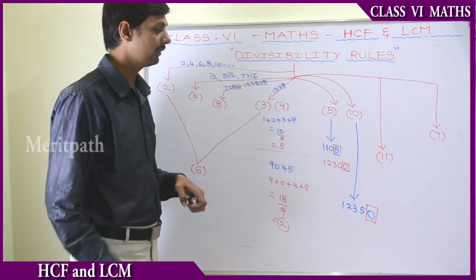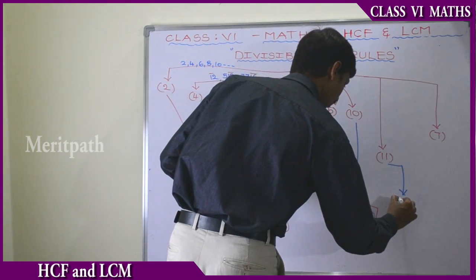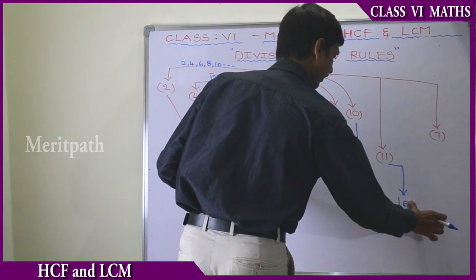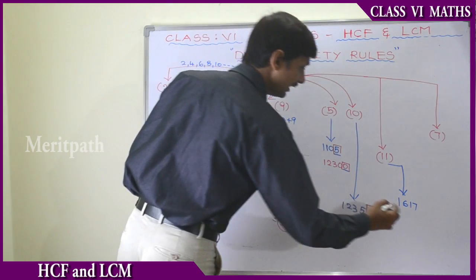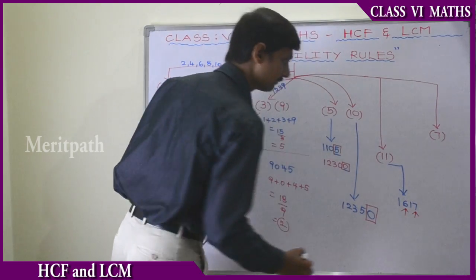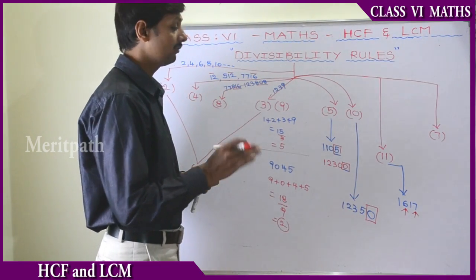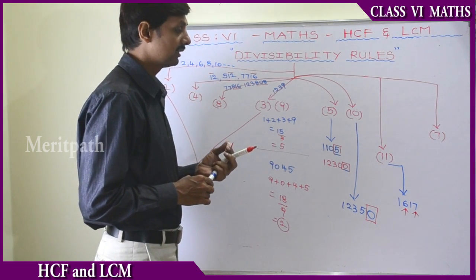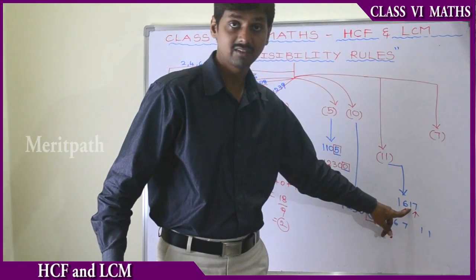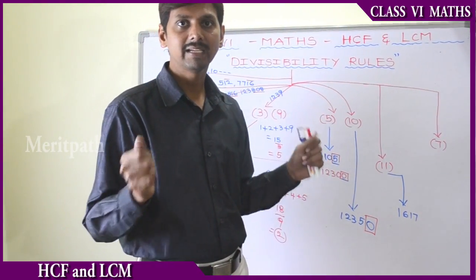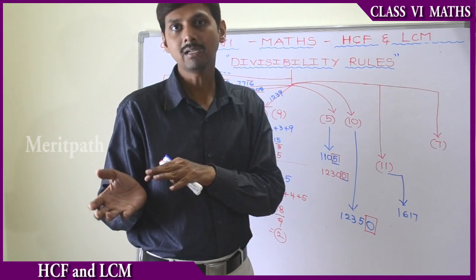Let us go to the property of 11. Take the number 1617. We observe the alternative digits of this number. We take 7 and 6 as the odd-place digits (taking alternate digits: 7, skip 1, take 6, skip 1). The other digits are 1 and 1 as the even-place digits. The rule is: when the difference between the sum of odd-place digits and the sum of even-place digits is 0 or a multiple of 11, then the whole number is divisible by 11.